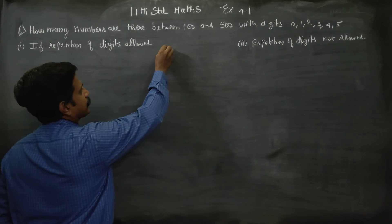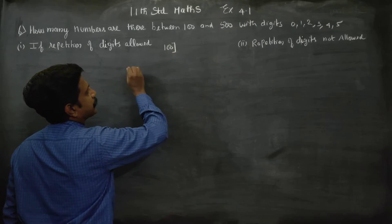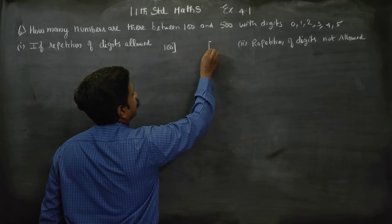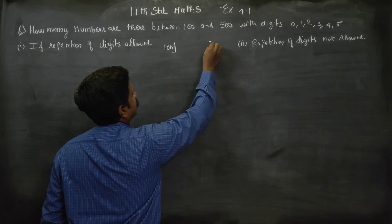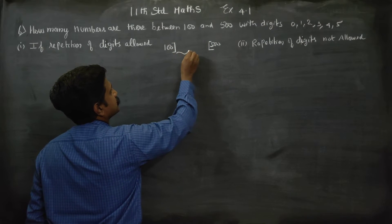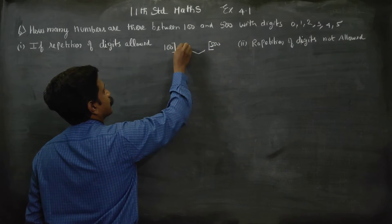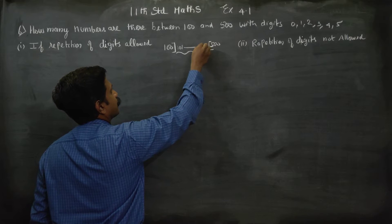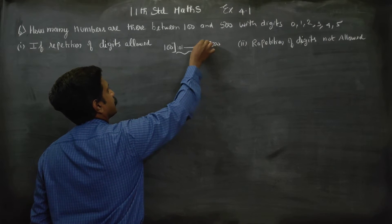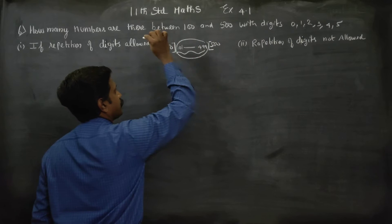Between means 100 is not in our game, and 500 is not in our game. In our game, it starts from 101 to 499. 'Between' means it is strictly between — this is the meaning of between.